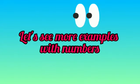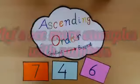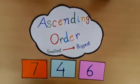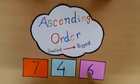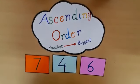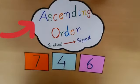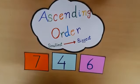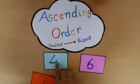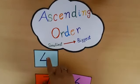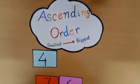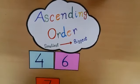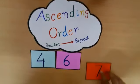Let's see more examples with numbers. Students, I have three numbers: 7, 4, and 6. Now I have to arrange these numbers in ascending order, means smallest to biggest. First I will take number 4, because 4 is the smallest number. Now I will take number 6. Next I will take number 7.